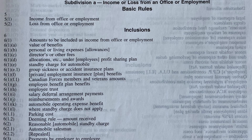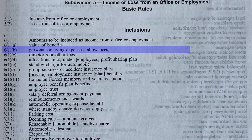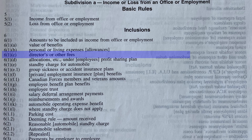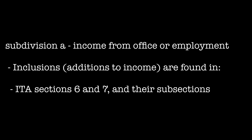Section 6 has a number of different subsections and paragraphs. Section 6, Subsection 1 says amounts to be included as income from office or employment, and it's broken down into Paragraph A, the value of benefits; Paragraph B, personal or living expenses; Paragraph C, directors or other fees; and on and on. If you flip the page to Section 7, you'd see 7.1 talks about the agreement to issue securities to employees, better known as stock options. So if you're looking for what is included in income for an individual's employment, you look at Subdivision A — specifically Section 6 and Section 7 and the subsections therein.